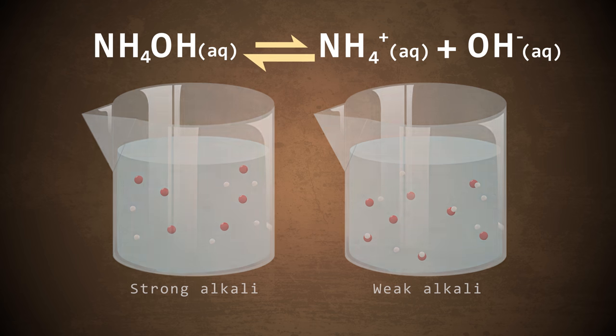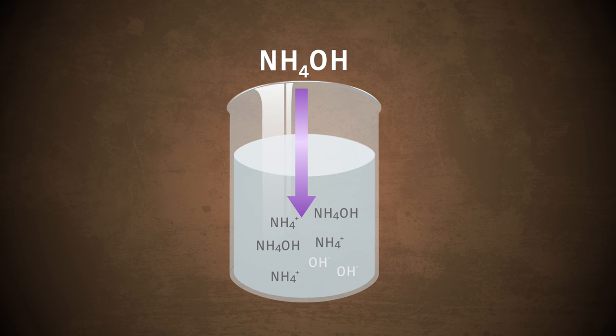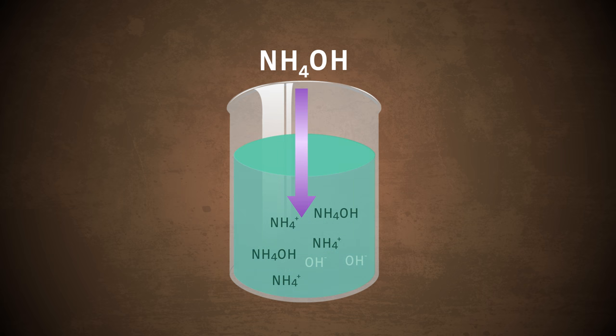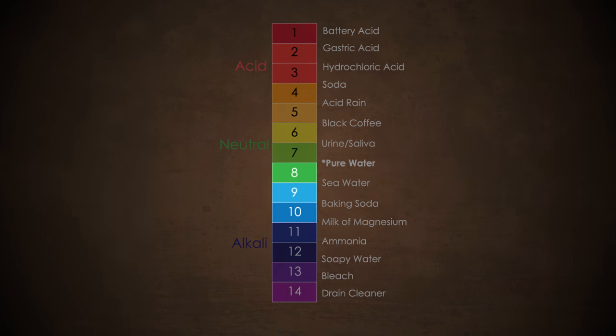Note the equilibrium arrow. The concentration of OH minus ions in a solution containing a weak alkali will be much lower. These substances when dissolved in water will turn universal indicator solution a green or a light blue and are less corrosive than strong alkalis for a given concentration. The pH of these substances will be closer to the middle of the scale.